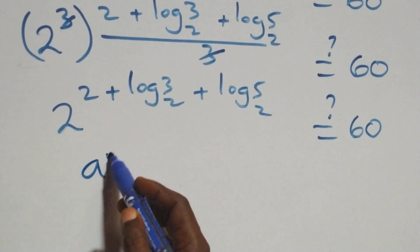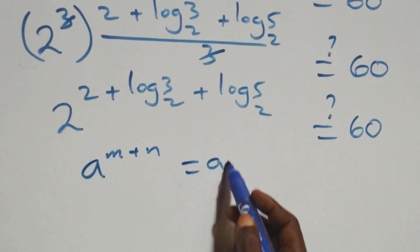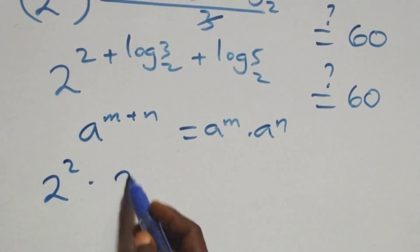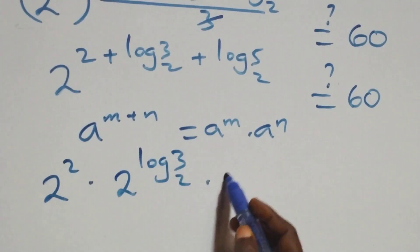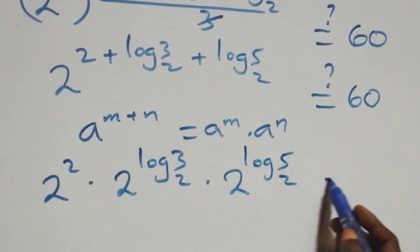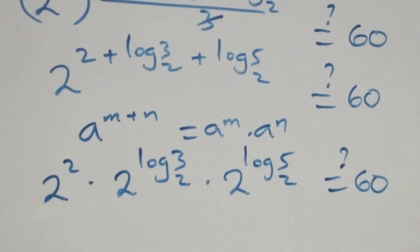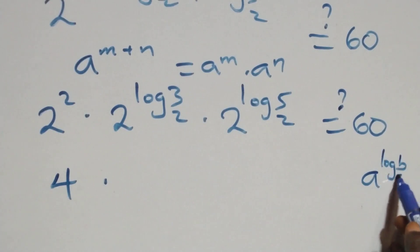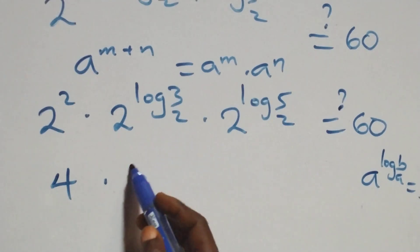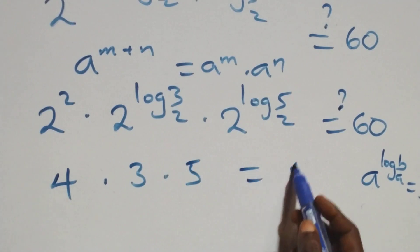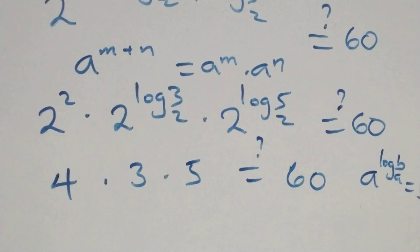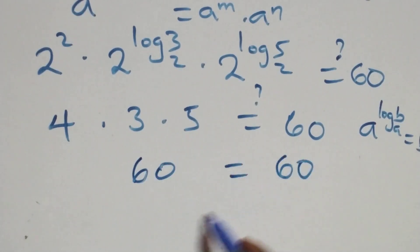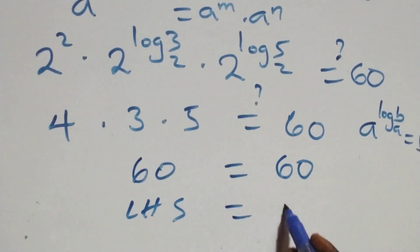We apply the law of indices: a raised to power (m plus n) is the same as a raised to m times a raised to n. So we have 2 squared times 2 raised to power log 3 base 2 times 2 raised to power log 5 base 2, which equals 60. Now 2 squared is 4, and using the identity a raised to power log b base a equals b, we get 4 times 3 times 5. That is 4 times 3 equals 12, and 12 times 5 equals 60, which equals 60 on the right-hand side. Verified.